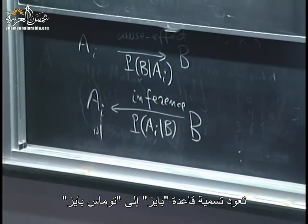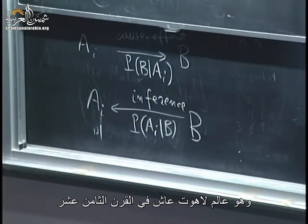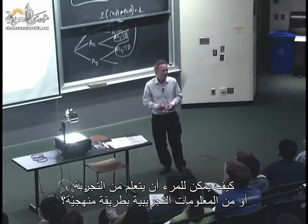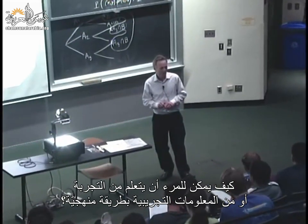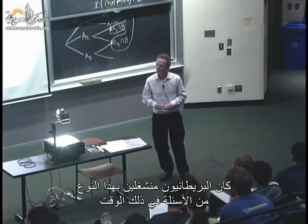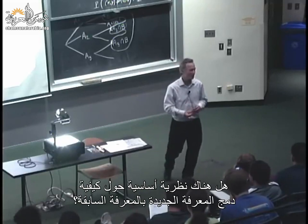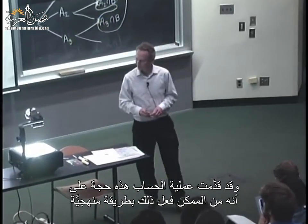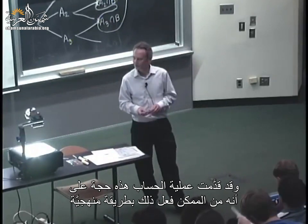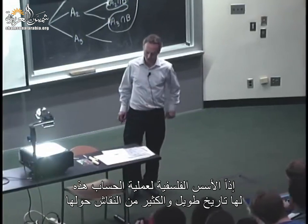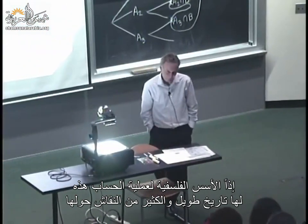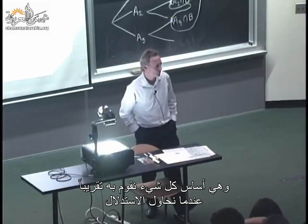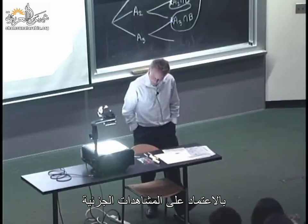Schematically, we have a cause-and-effect model: a scenario occurs and may cause B to happen or not. We model this with P(B|Ai). What we want is inference — told that B occurred, we infer whether Ai occurred using P(Ai|B). Bayes' rule comes from Thomas Bayes, a British theologian in the 1700s, and addresses a basic philosophical problem: how one can learn from experience or experimental data systematically. For our purposes, it is an extremely useful tool and the foundation of almost everything done in inference based on partial observations.